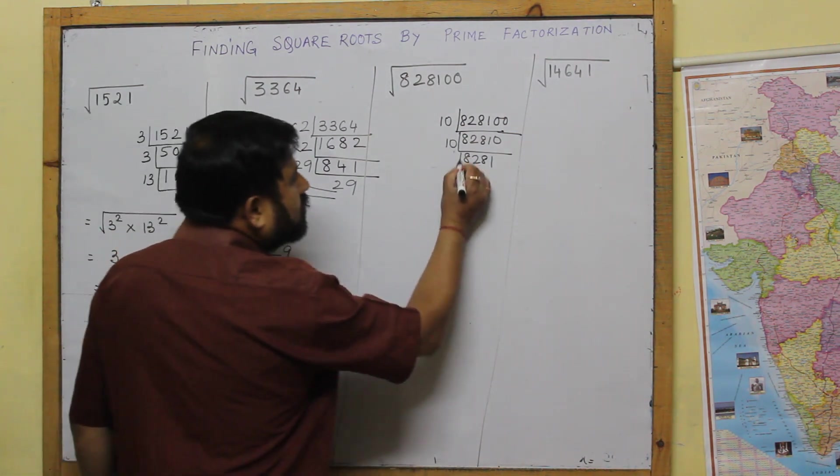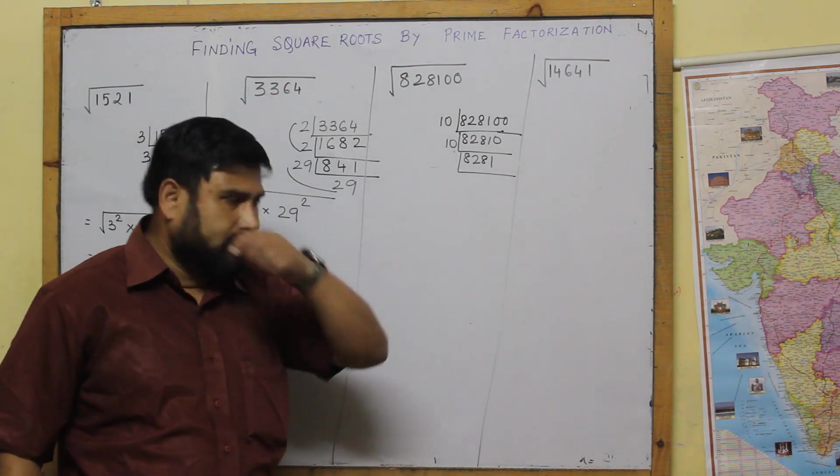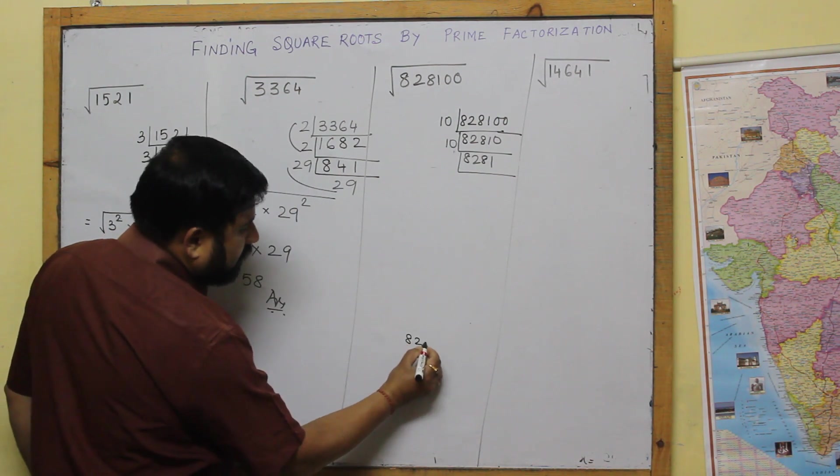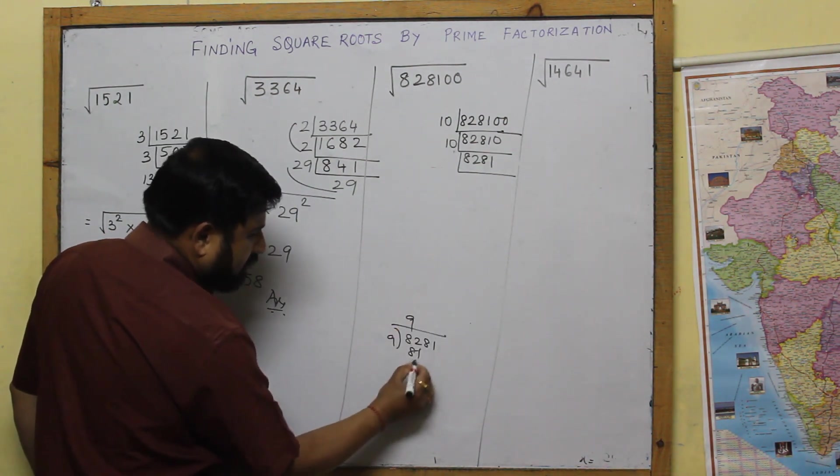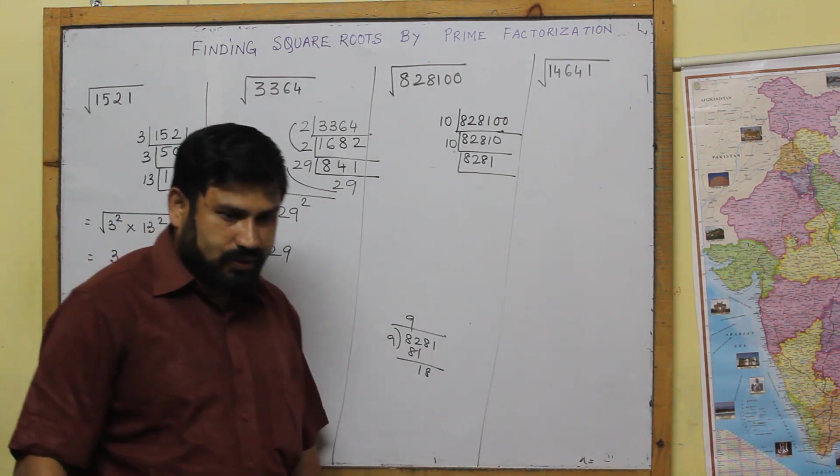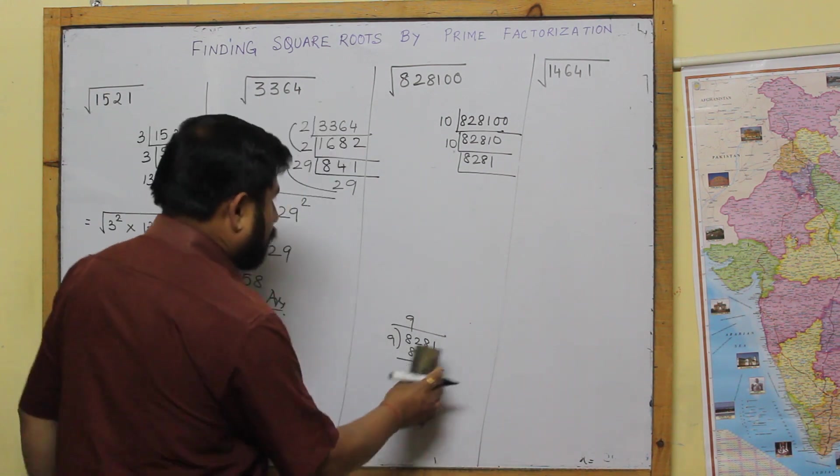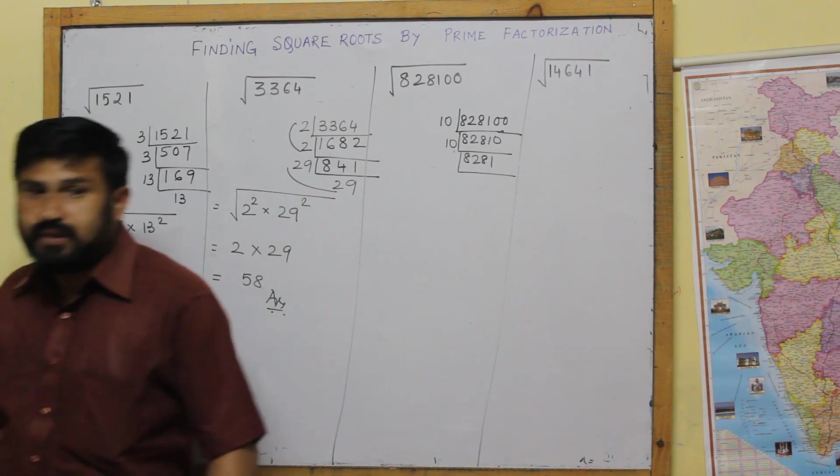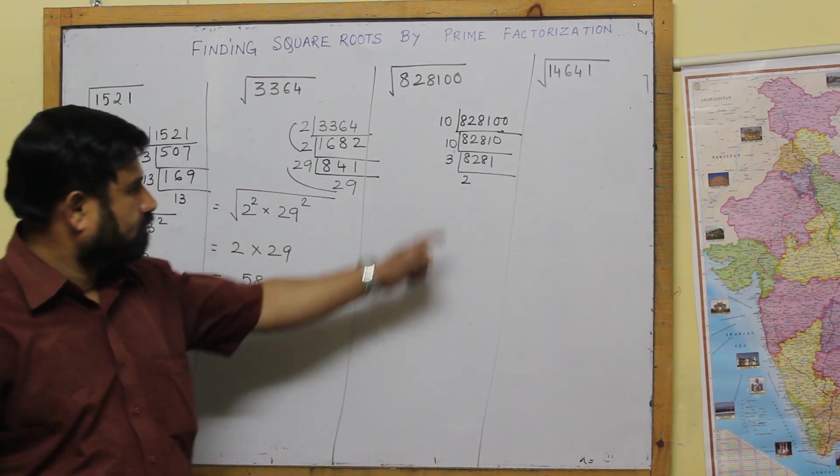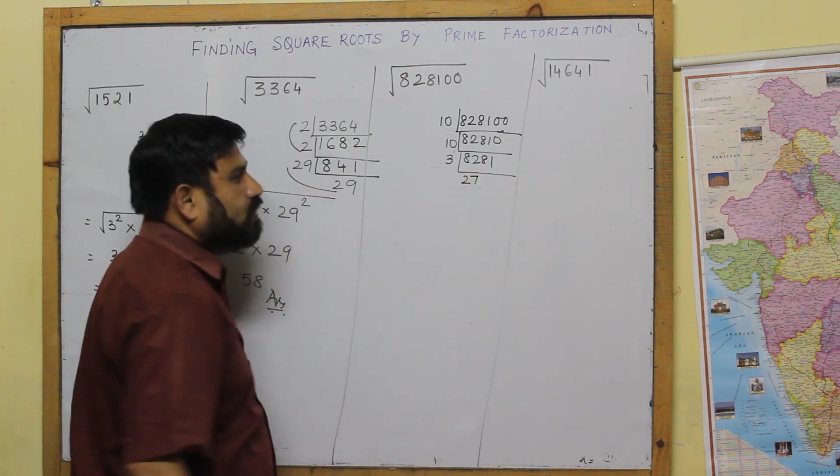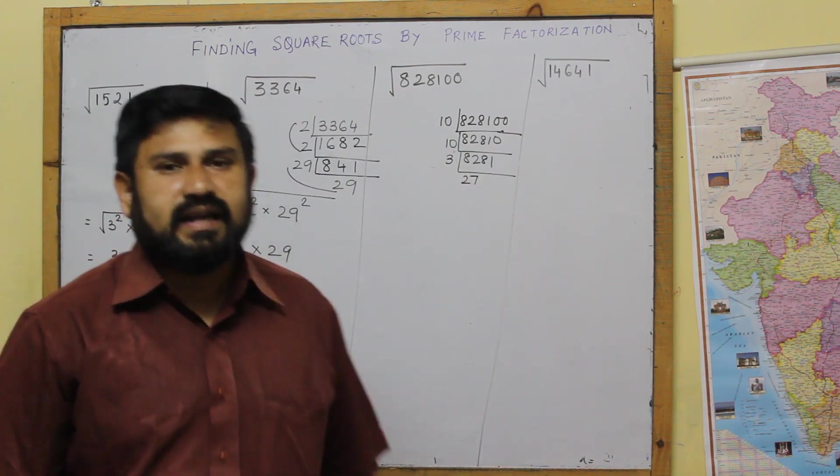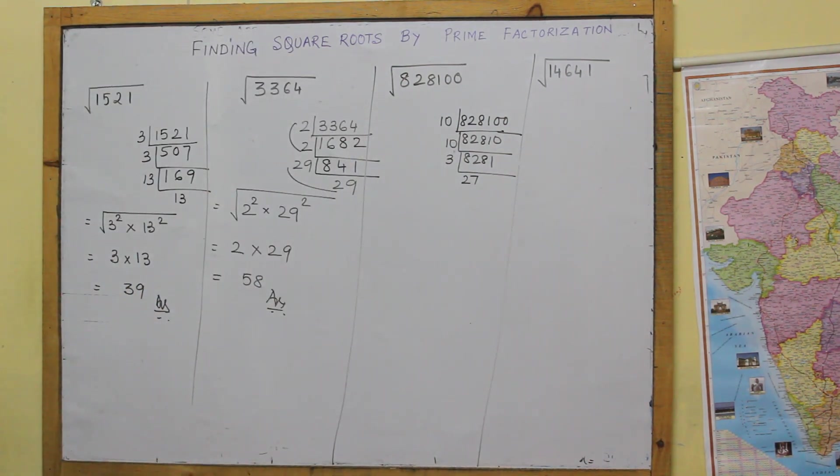Remember if there are two zeros or even number of zeros then we can divide it by 10. If there is a single zero it will be difficult. Now comes 8281. Since again the last number is odd, let's try with 9. Will it go with 9? I don't think so it will go with 9. So what is the next number which will become easier for us? Let's try 3.